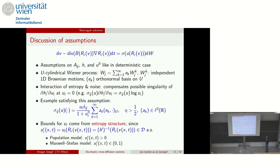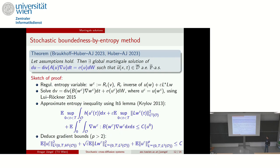Under these assumptions, we have the bounds, which come again from the entropy structure. We are solving everything in terms of the V variable, plugging it into the regularization operator, and outside we have the function u_i expressing the density. Since this equals the inverse of H', pointwise and almost surely we lie in the space D — we have positivity for the population model and bounds between zero and one for the Maxwell-Stefan model.